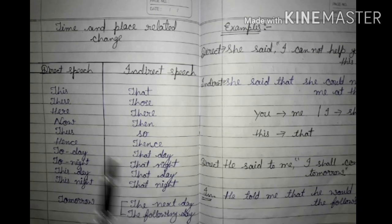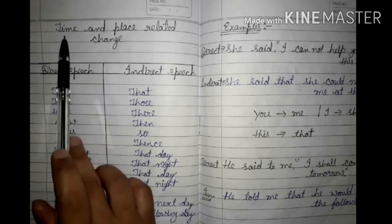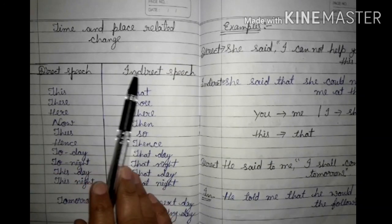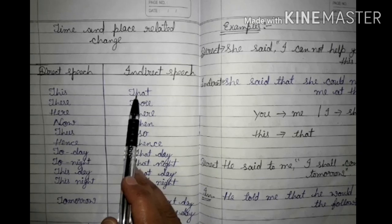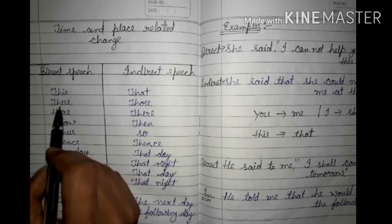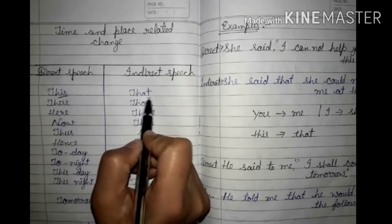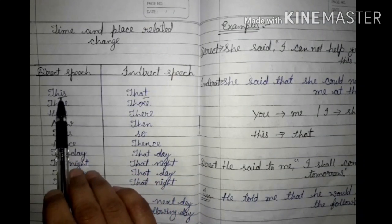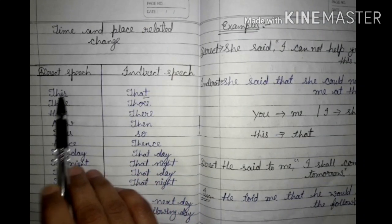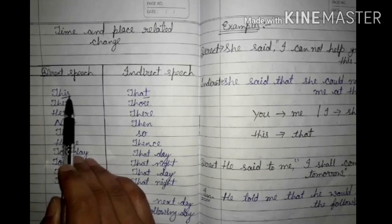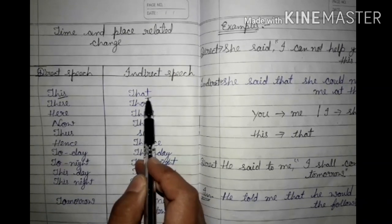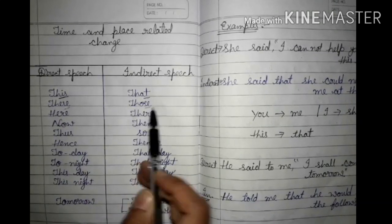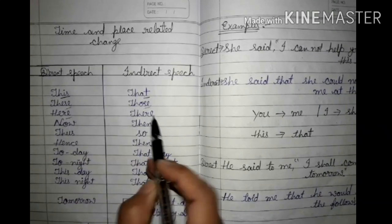In the direct part, if there is a time and place related word, you will change it in indirect speech. 'This' you have to change into 'that'. In reported speech, wherever you see 'this', change it to 'that'. 'These' will change into 'those'. 'Here' will change into 'there'.